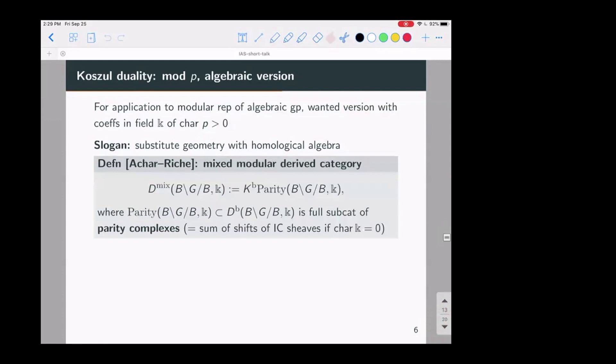So here's one step, the definition of Achar and Reich. Instead of working with etal sheaves, you define as some notion of mixed category with a positive characteristic complexes of what are called parity, parity sheaves or parity complexes. And in characteristic zero, this is the same thing as some sort of shifts of, I probably skipped this part, but intersection cohomology sheaves, which are things that categorify the Kazhdan-Lusztig polynomials.